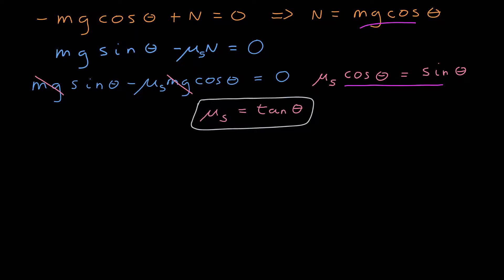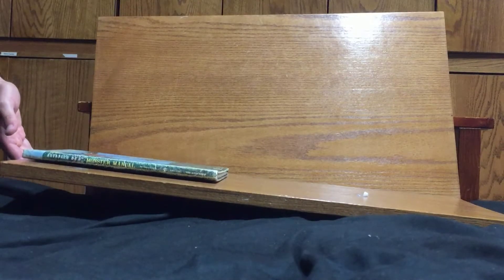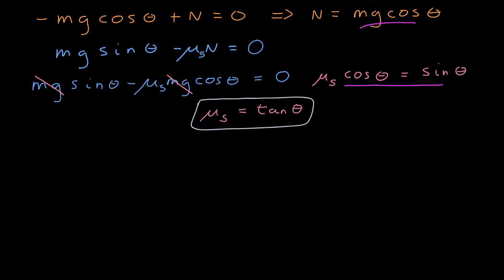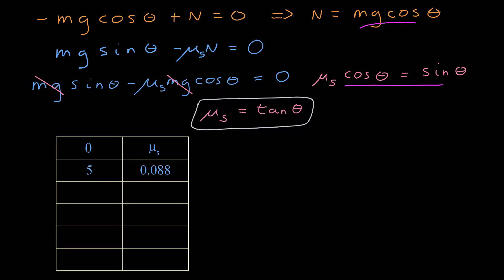Think about what that means in terms of the video. As one side of the shelf increased, theta increased during that entire time, and the coefficient of static friction increased during that entire time. The coefficient of static friction changed until the book started sliding down the shelf. At 5 degrees it had a value of 0.088; at 10 degrees, 0.18; at 15 degrees, 0.27; at 20 degrees, 0.36. And finally at 22 degrees — the highest point before the book slid — that is a characteristic of the coefficient of static friction.